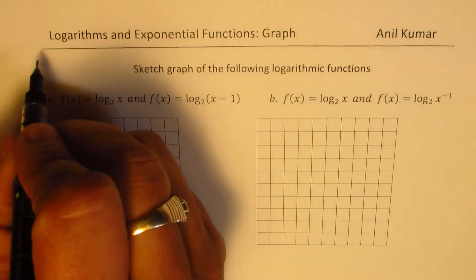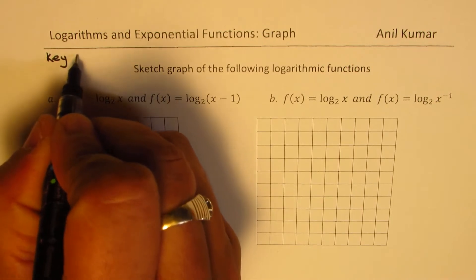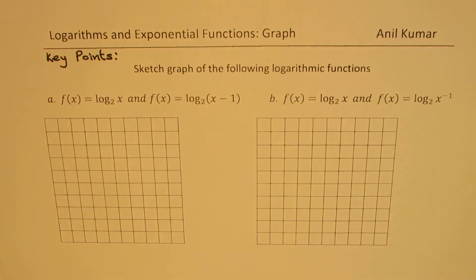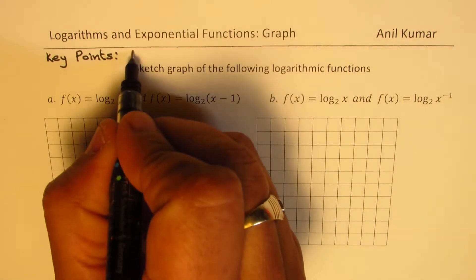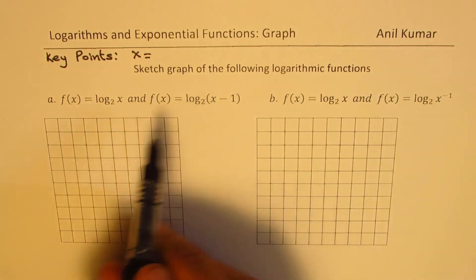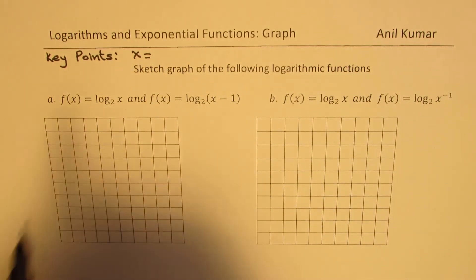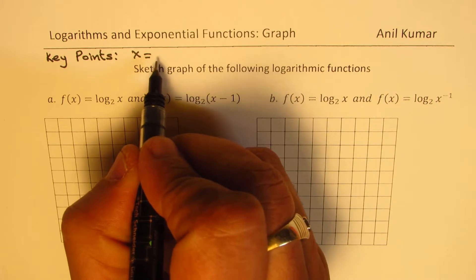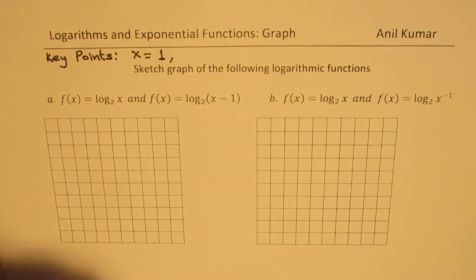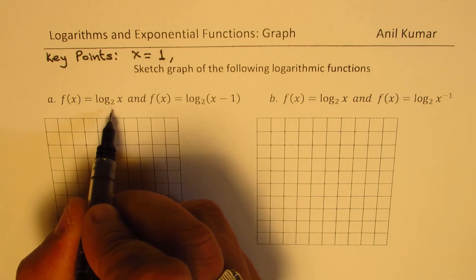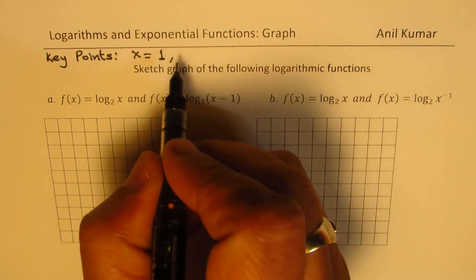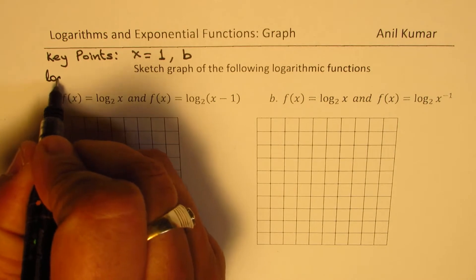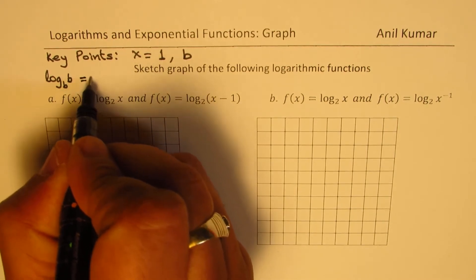To begin with, we have to identify some key points. For a logarithmic function, what could be the key points? One important value is when x equals 1. So that is kind of an important value. Then we could have a value which is the base itself — so in this case it is 2, but in general, for log to the base b of b, we know this value is 1.